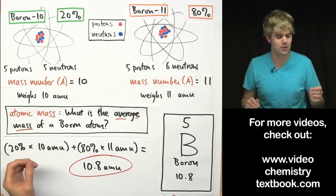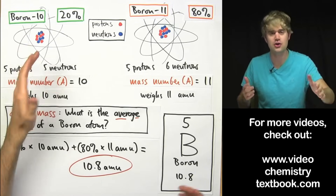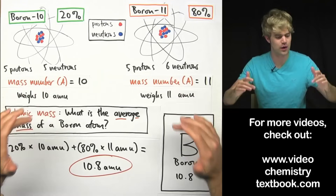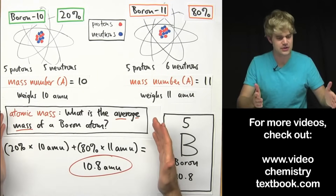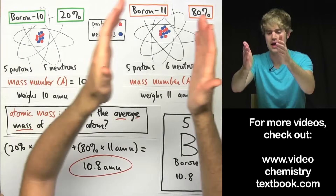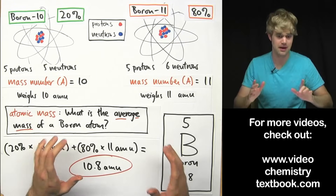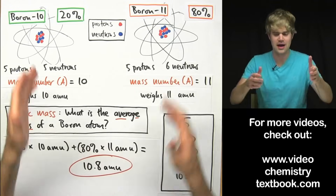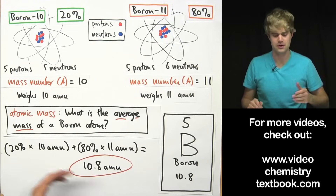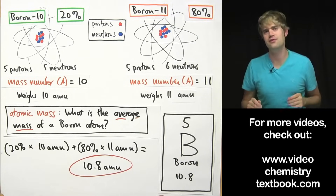So let's review. Mass number is the number of protons and neutrons in a particular atom or isotope, and from it you can figure out how much the atom weighs in AMU. Atomic mass looks at all the different isotopes for a particular element — in this case boron-10 and boron-11 — takes into account the abundance of each, and calculates the weighted average mass of all the different types. That is the difference between mass number and atomic mass. If you want to learn more about how to calculate atomic mass, I've got videos on that. Thank you.